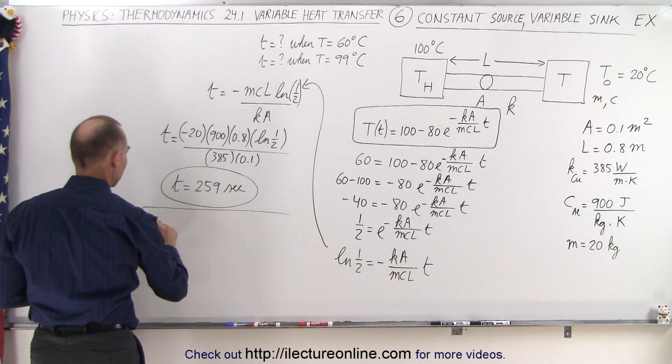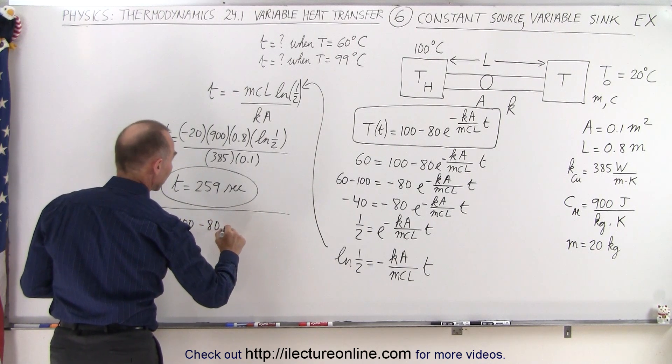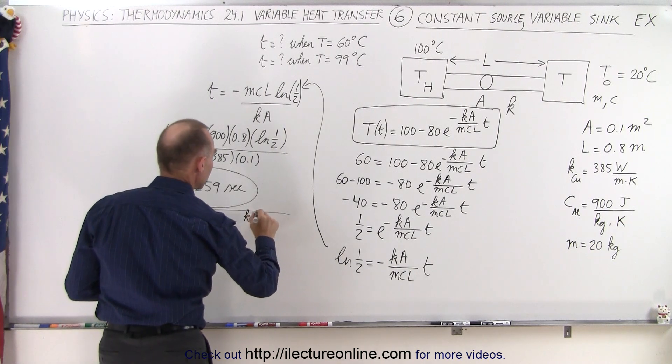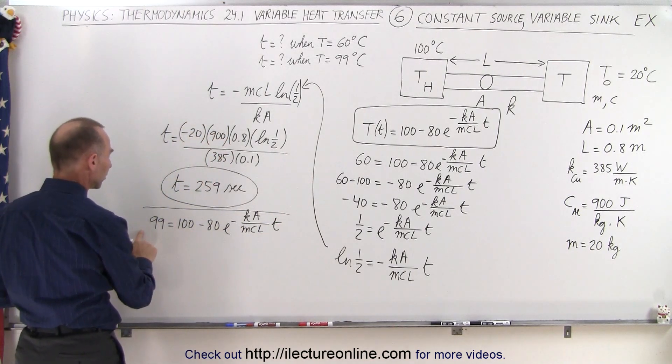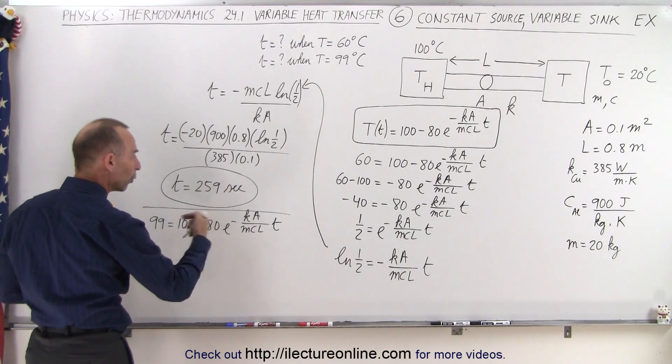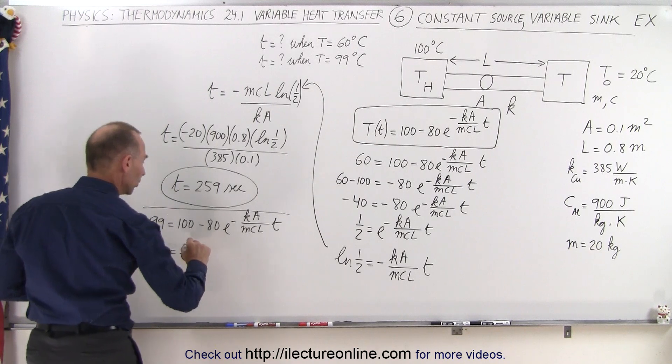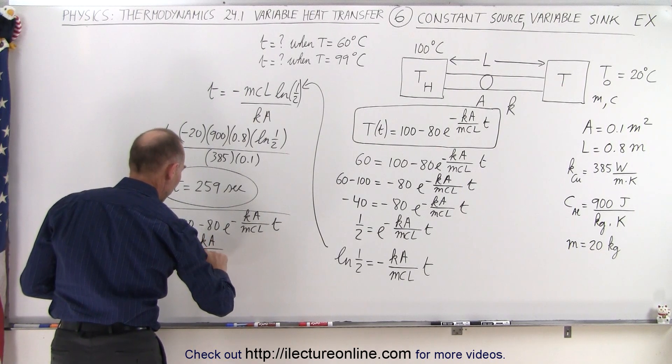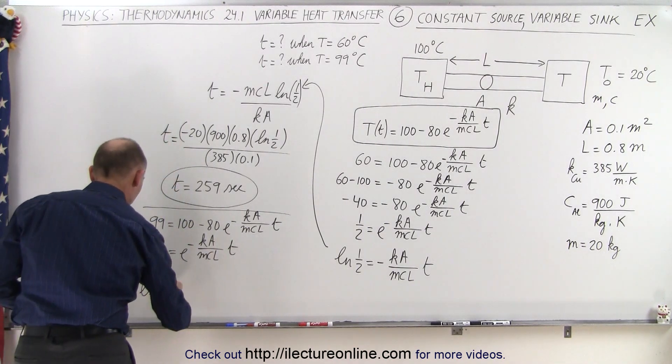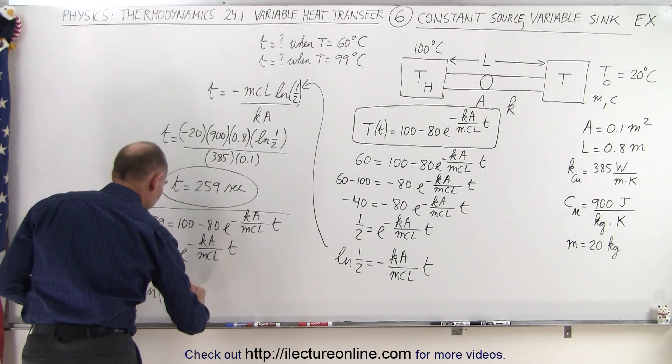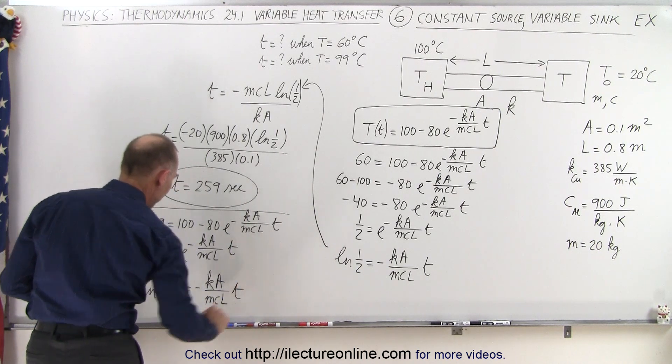we end up with 99 equals 100 minus 80 times E to the minus KA over MCL times time. So now when I move the 100 across, I get minus 1 divided by minus 80, which is 1 over 80. So 1 over 80 equals E to the minus KA over MCL times T. Then I take the natural log of both sides, so we get the natural log of 1 over 80 equals minus KA over MCL times time.